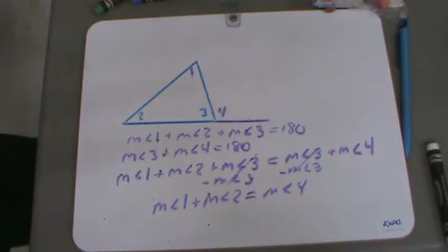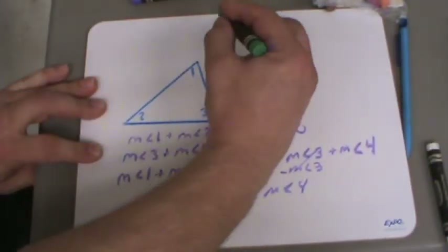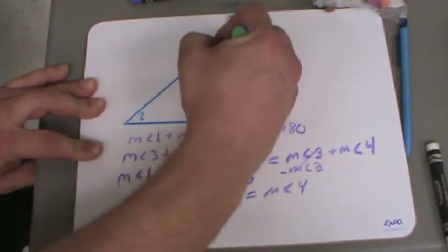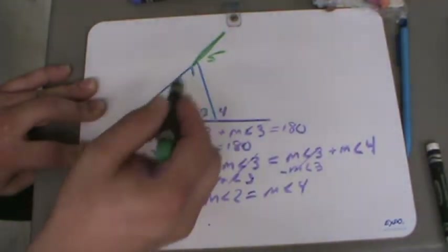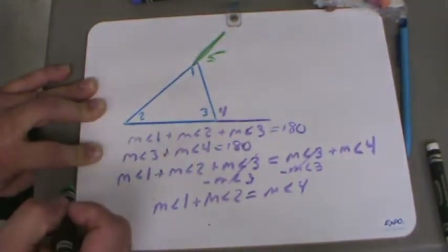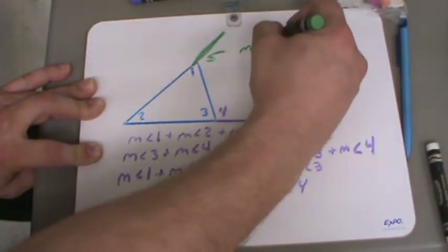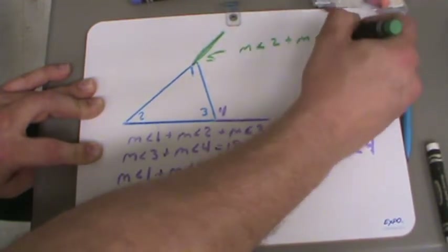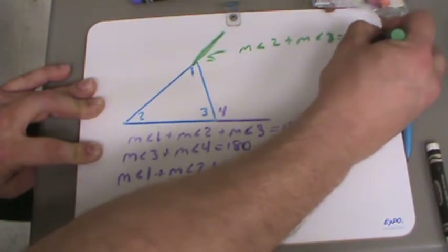And that will work for any exterior angle on that triangle. So if I were to extend this line here and label this angle 5, the remote interior angles for 5 would be 2 and 3. So the measure of angle 2 and the measure of angle 3, when added together, are going to equal the measure of angle 5.